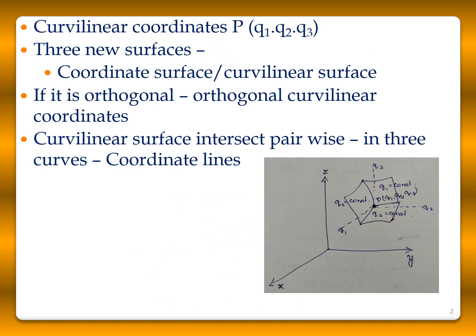Take a point P as a function of q1, q2, q3 in the Cartesian coordinate system x, y, and z. Here q1, q2, q3 are curvilinear coordinates. We get three different surfaces: one where q1 is constant, one where q2 is constant, and one where q3 is constant. These three new surfaces are curved in nature and are called coordinate surfaces or curvilinear surfaces.